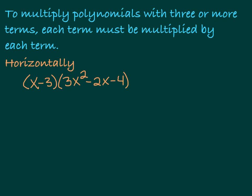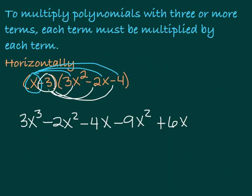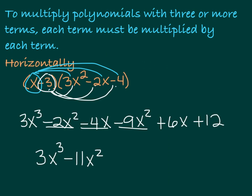To multiply polynomials with three or more terms, each term must be multiplied by each term. It's like FOILing, but extra FOILing — think of it as distributing each number. I'm going to take x and multiply it by 3x squared, by negative 2x, and by negative 4. Then I'll take minus 3 and multiply it by 3x squared, minus 2x, and minus 4. x times 3x squared is 3x cubed. x times negative 2x is minus 2x squared. x times negative 4 is minus 4x. Negative 3 times 3x squared is minus 9x squared. Negative 3 times negative 2x is plus 6x. Negative 3 times negative 4 is plus 12. Combining like terms: 3x cubed, then minus 11x squared, plus 2x, and plus 12.